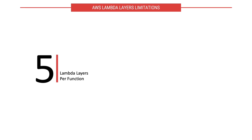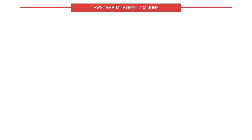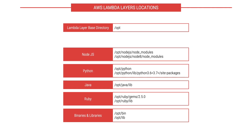As is the case with all AWS services, Lambda layers also have some limitations. You can have up to five Lambda layers per Lambda function, and the unzipped layer size should not exceed 250 MB. Once you add a layer to your Lambda function, the package will be extracted into /opt of your Lambda runtime.